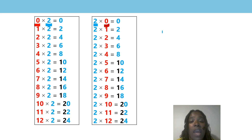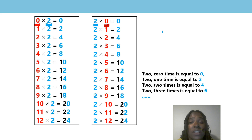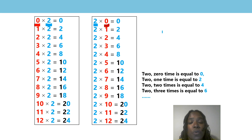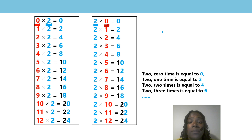We are now going to recite the two times table focusing on the version on the right, using the stem sentence to help us. Are you ready? 2 times 1 is equal to 2. 2 times 2 is equal to 4. 2 times 3 is equal to 6. 2 times 4 is equal to 8. 2 times 5 is equal to 10. 2 times 6 is equal to 12. 2 times 7 is equal to 14. 2 times 8 is equal to 16. 2 times 9 is equal to 18. 2 times 10 is equal to 20. 2 times 11 is equal to 22. 2 times 12 is equal to 24. Great job! Excellent counting.